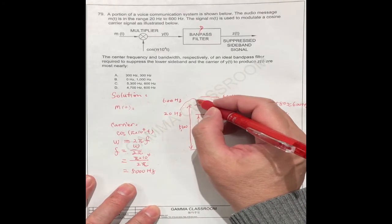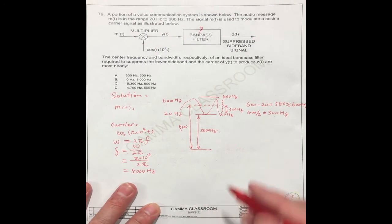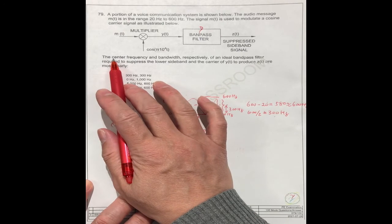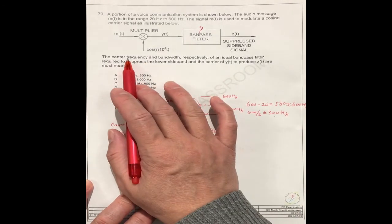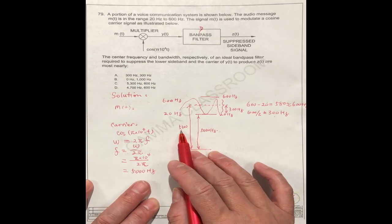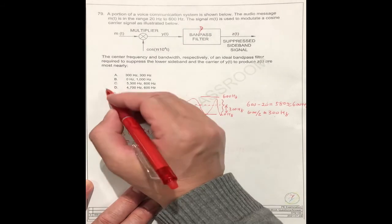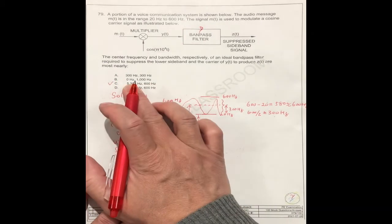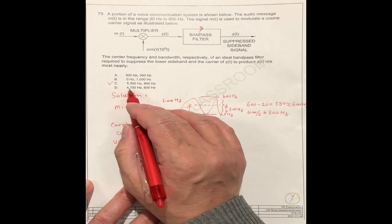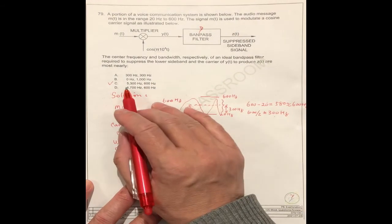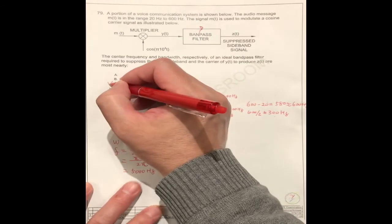So the answer, you see, he asks you what is the center frequency and the bandwidth. The bandwidth we can call 600. The center frequency we can call 5300. So you see here the number, question C, it's 5300 hertz. The bandwidth is 600. This should be 5000 plus this one. So the correct answer should be number C.